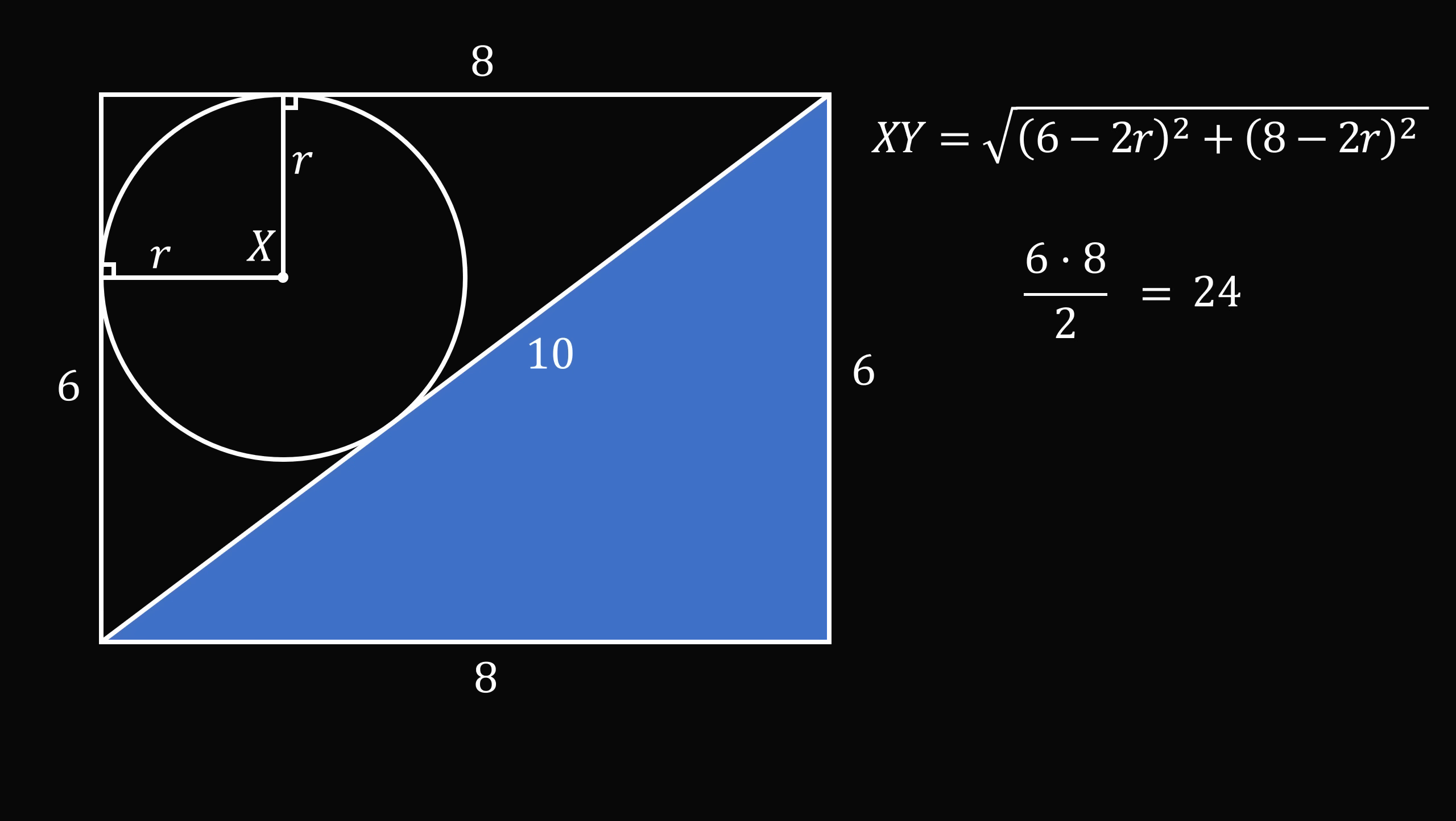But there is another way that we can solve for the area of half the rectangle. Construct the following radius of circle X to the tangency point with the diagonal of the rectangle.